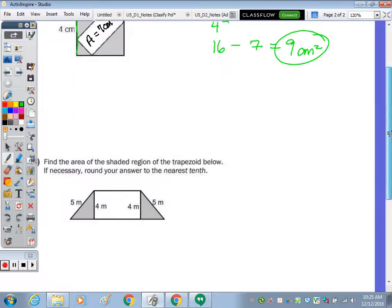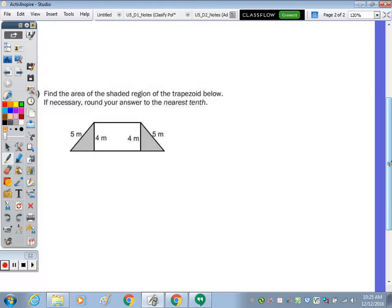And the last one. Find the area of the shaded region of the trapezoid below. If necessary, round your answer to the nearest tenth. So the area of the trapezoid. We know these altitudes are drawn perpendicular. And we have two right triangles on each side. One on the left, one on the right. And these are triples. So this is the 3, 4, 5 triple.